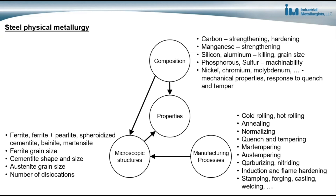And finally, there are different manufacturing processes that are used on steels. There are a number of different heat treatments and mechanical treatments. Some of them are done by mills, some of them are done after a component has been fabricated as a final heat treatment. Regardless, we use these heat treatments to modify the microscopic structures in order to modify the properties. So by understanding the composition we need and the manufacturing processes used on the steel, we can get the properties that are needed for a particular application.